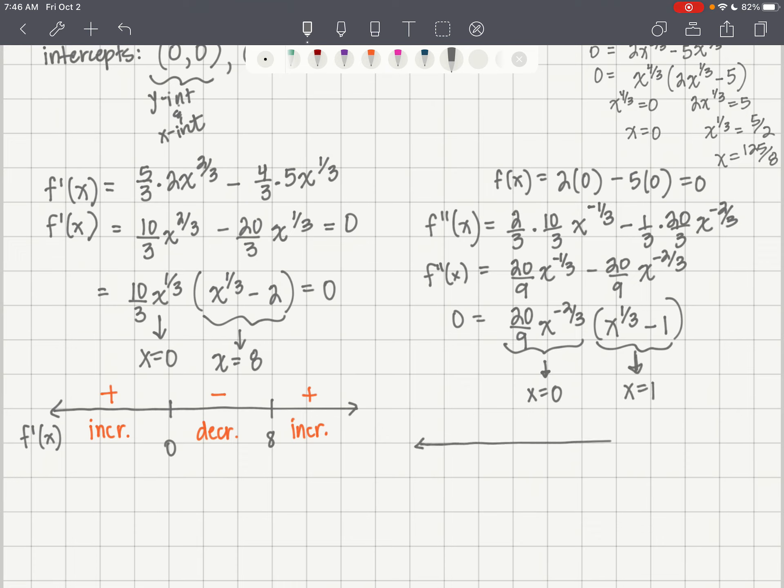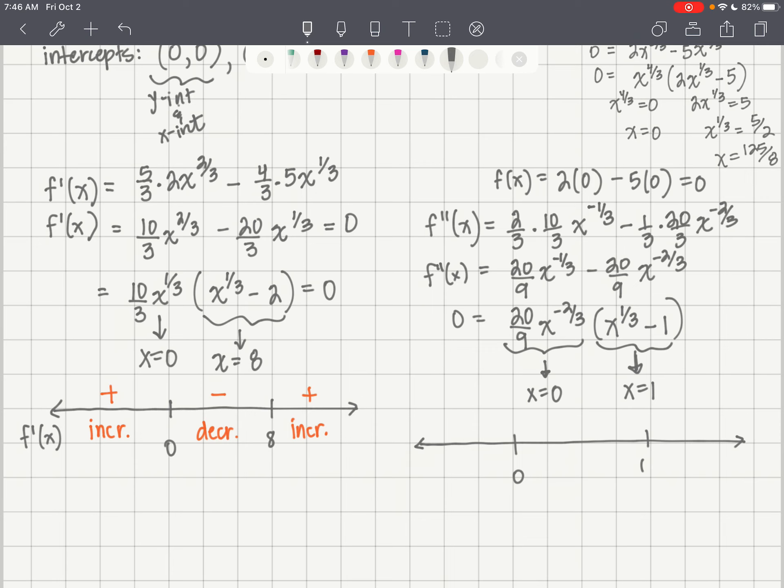So on the number line, we've got 0 and 1. This would be a good place for you to test into your second derivative and see if you can find the concavity. I found this first interval to be negative, that means it's concave down. The second interval, I found negative, that's concave down. And then the third interval, I found positive, so that's concave up.